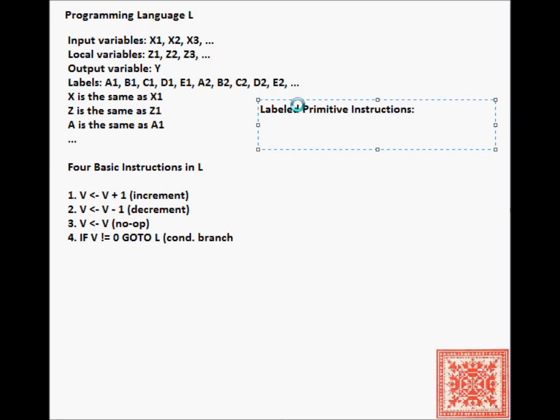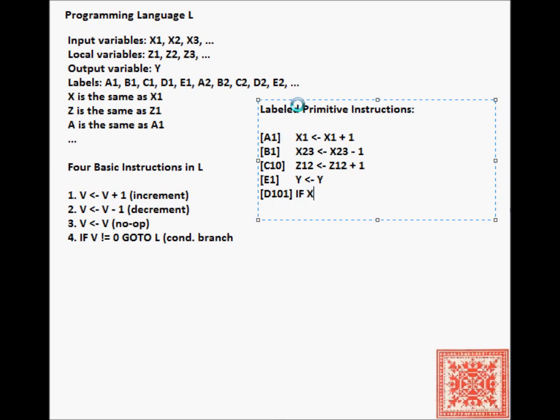We can have labeled primitive instructions with a label in square brackets at the beginning of the line. For example, [A1] X1 arrow X1 plus 1 - an incremented label instruction. [B1] X23 arrow X23 minus 1 - a decremented labeled instruction. Here's another increment label instruction, a labeled no-op primitive instruction, and a labeled conditional branch.